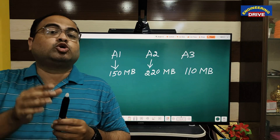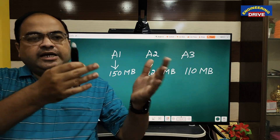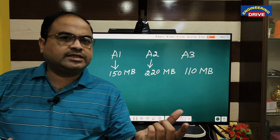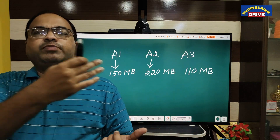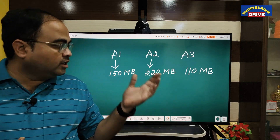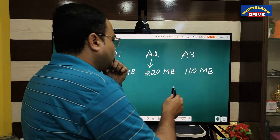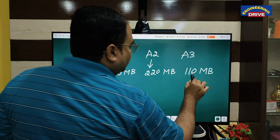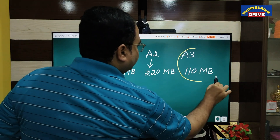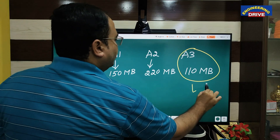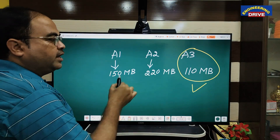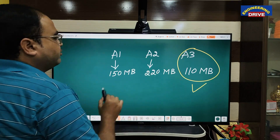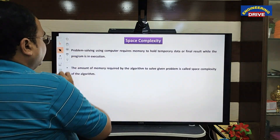Space complexity says the amount of memory taken by the algorithm should be less, so that it can be downloaded and used by multiple users. If the memory size is small, a lot of people will tend to download it. Because of this, I will select algorithm A3, because it will take less memory in the computer or in storage devices.